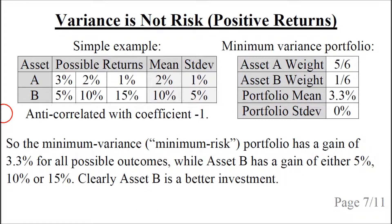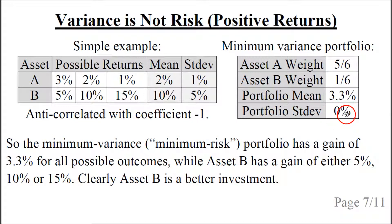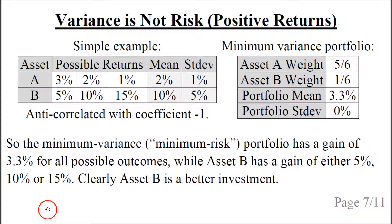In the previous example, asset A had negative returns, which could be filtered out by adding a constraint to the portfolio optimization requiring positive returns. So let's replace asset A's returns with 3%, 2%, and 1%, giving a mean of 2%. These are all positive, and we get the same minimum variance portfolio weights of 5/6 for asset A and 1/6 for asset B. Now the portfolio mean return is 3.3%, and the portfolio standard deviation is still 0. So the minimum variance portfolio has a guaranteed gain of 3.3% for all possible outcomes. However, asset B still has a gain of either 5%, 10%, or 15%, so asset B is clearly still a better investment even though asset A now has positive returns.